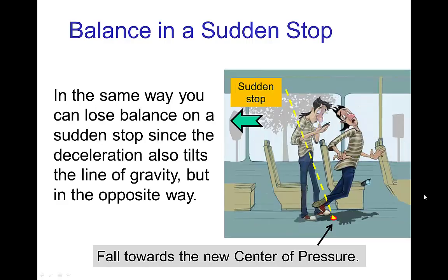A similar case happens if the bus is moving at constant speed but then suddenly stops. This deceleration causes the line of gravity to tilt in the opposite direction. As you see here, the new center of pressure is again outside the character's base of support, and the character is thus out of balance due to the sudden stop and falls towards the center of pressure.